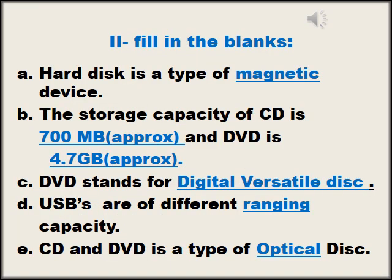After the question answer, move on to Exercise 2 on page number 16 — Fill in the blanks. Read the sentences carefully and give the proper answer. A: Hard disc is a type of magnetic device. B: The storage capacity of CD is 700 MB approximately and DVD is 4.7 GB approximately. C: DVD stands for Digital Versatile Disc. D: USBs are of different ranging capacity. E: CD and DVD is a type of optical disc.